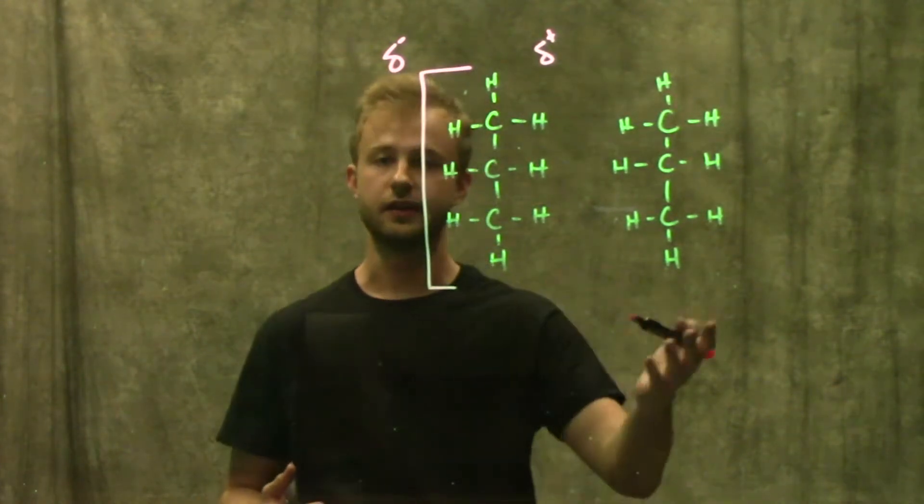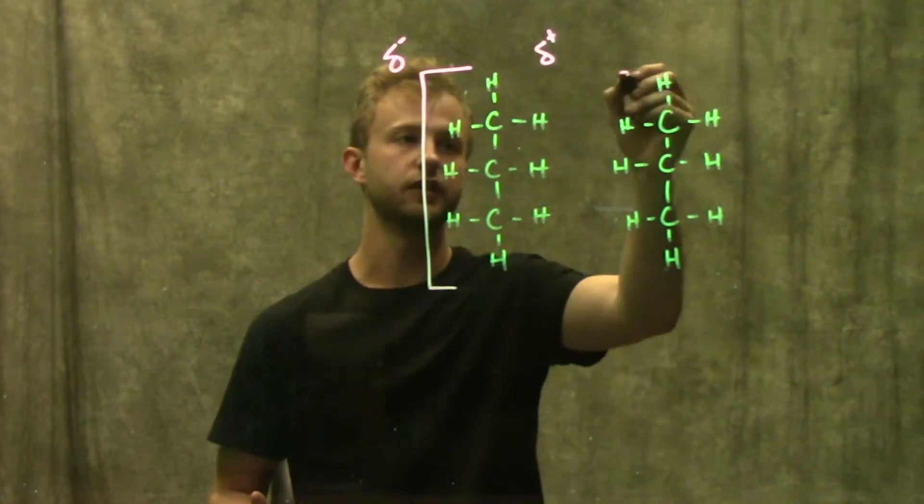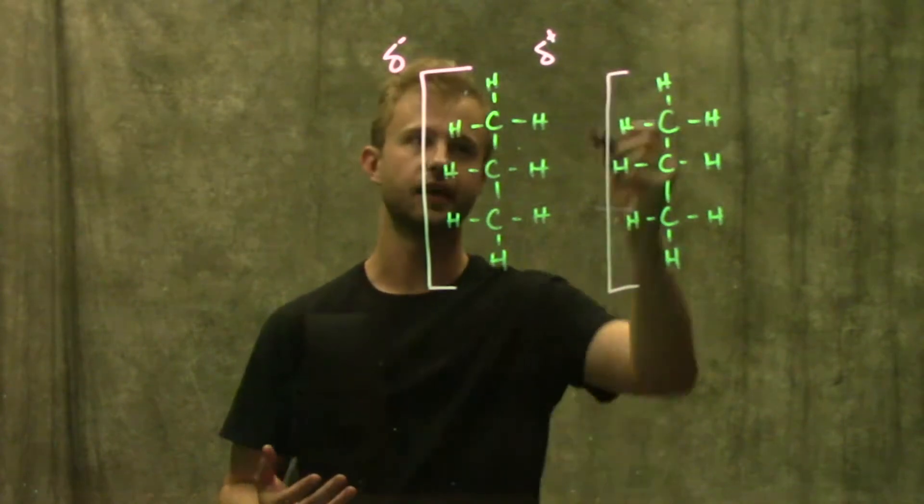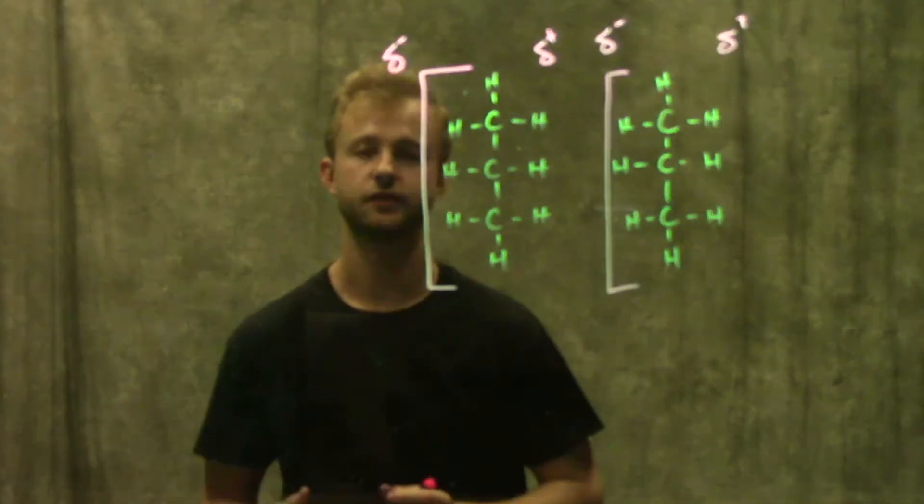Now in a neighboring molecule, we can have the same sort of thing happening. By random chance, we might have all of our electrons end up on this side to give this a partial negative charge and this side a partial positive charge.